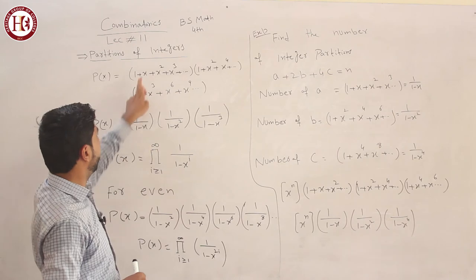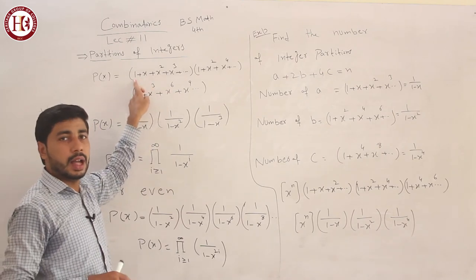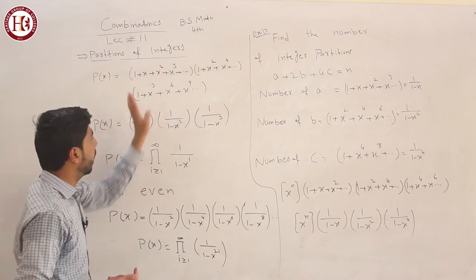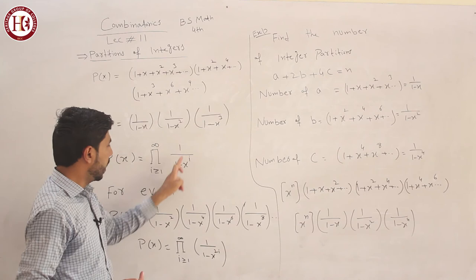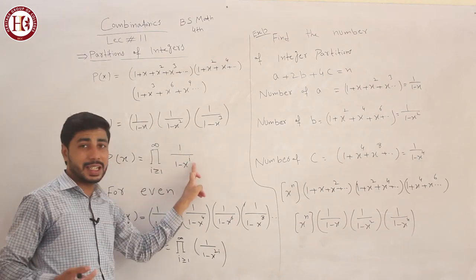The product form is: product from i greater than or equal to 1 to infinity of 1 over (1 minus x^i). I have written all the powers. What is the power? It's i.